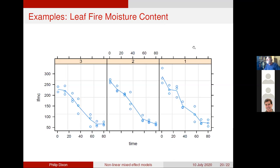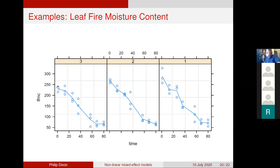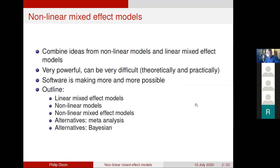Here are data from three plots, numbered one, two, and three. This is the moisture content in fuel in an Argentine grassland-shrubland. Each one of these curves might be fit with some sort of nonlinear model — something logistic shaped: flat at the beginning, drops, and then flat at the end. If we had just one plot, we'd use nonlinear regression. But with data from three plots, how do we incorporate the potential variability between them? That's what a nonlinear mixed effect model is going to try to do.